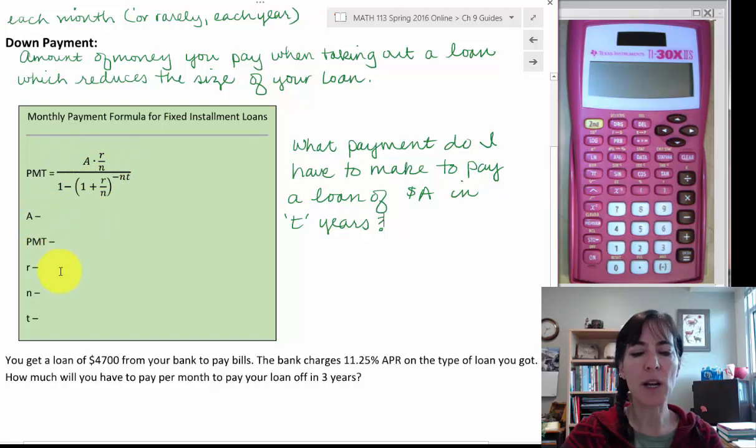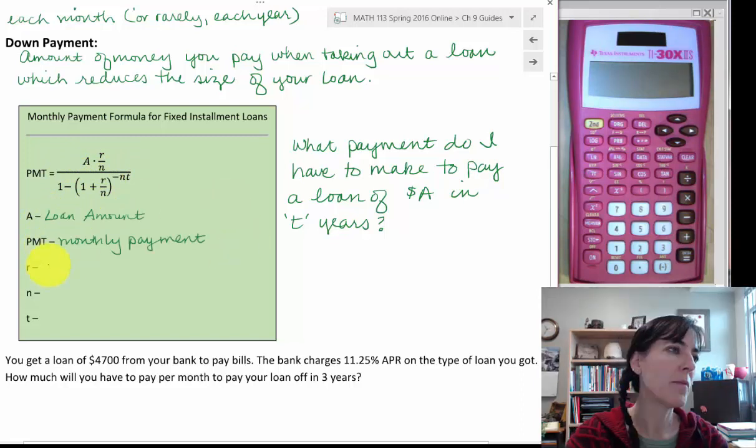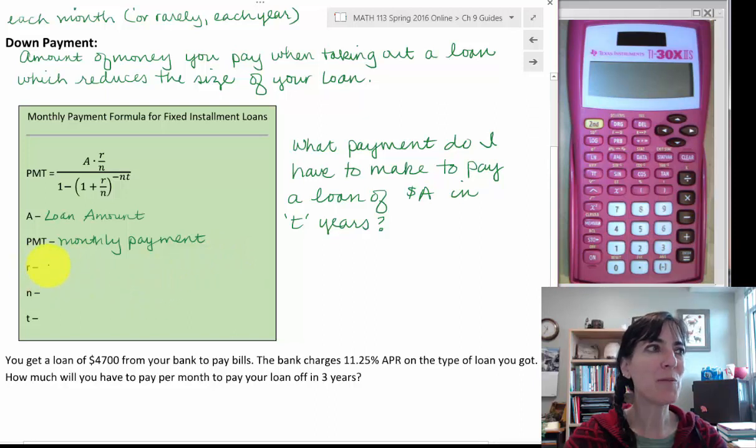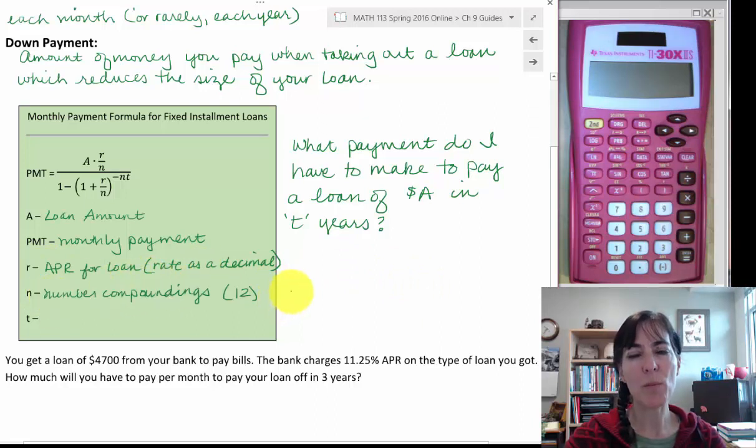So let's write out each part again. The A is the loan amount. The PMT is the monthly payment, as always. The R stands for the APR for the loan, which is also the rate as a decimal. The N is the number of compoundings, which we'll be using monthly, so that will be 12. And the T is going to be the number of years that you have to pay the loan.